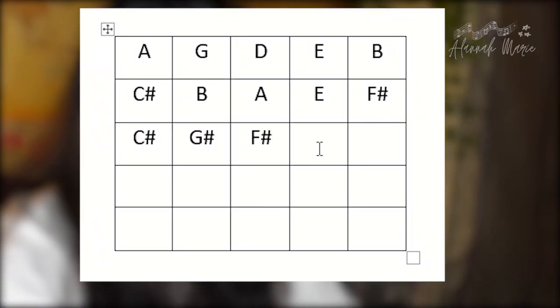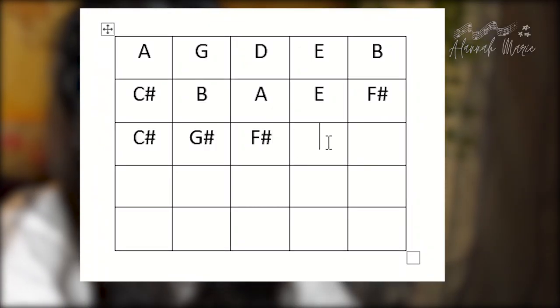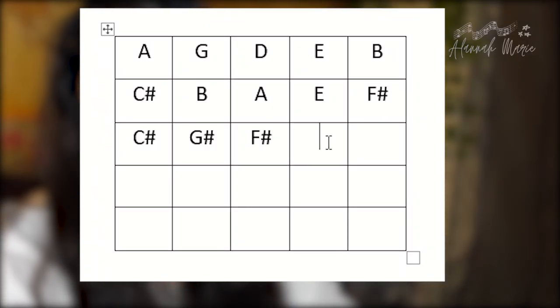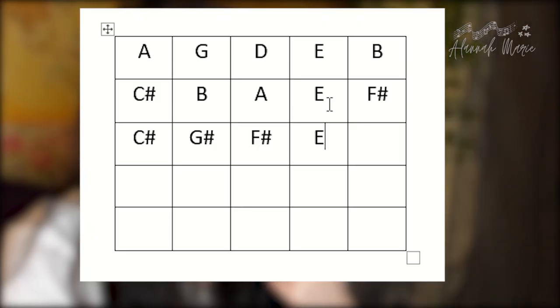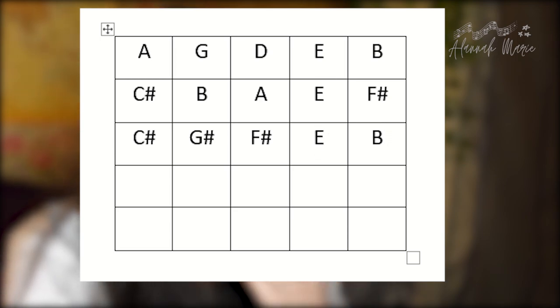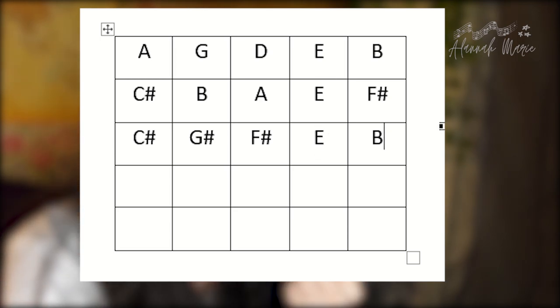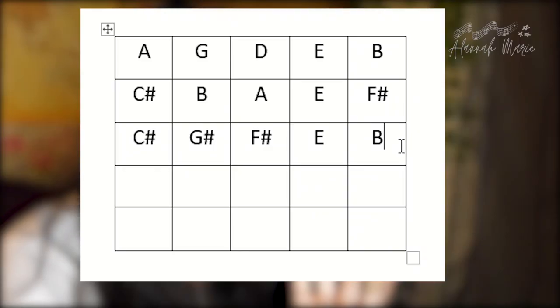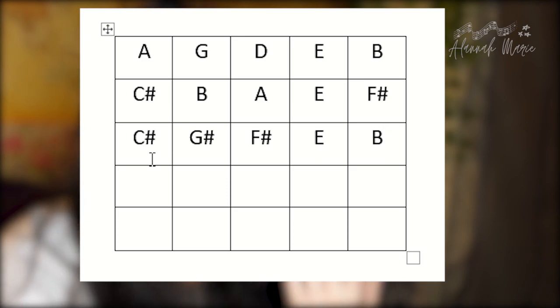So it's F sharp. And then A up a fifth would be E. I don't know if I'm doing this completely right. And then E up a fifth would be... are things supposed to repeat like this? Have I just done this by mistake? So we've gone up a second, we've gone up a fifth. Let's go up a minor third — that's four semitones. B up four semitones would be D.